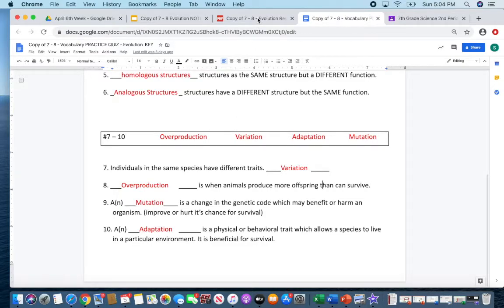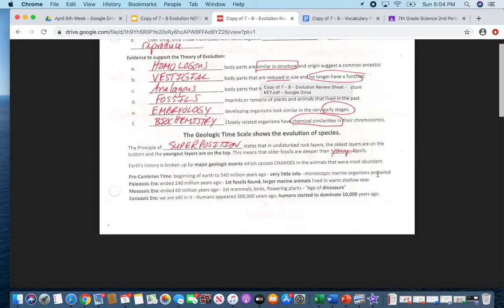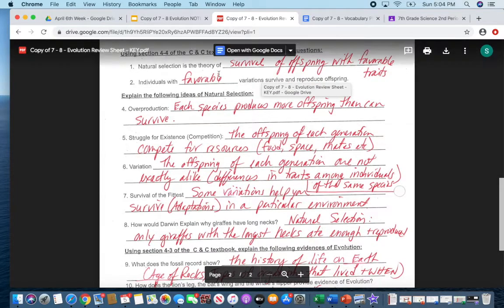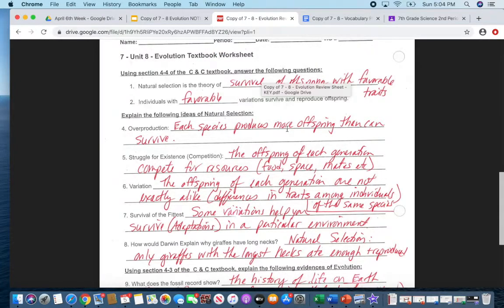Okay. The next one is we're going to skip this one. We're going to go down this one first. Your review sheet, not the review sheet, but the textbook review that you did. Remember, natural selection is the theory of survival of the offspring with favorable traits. He who has favorable traits are going to be more likely to survive.